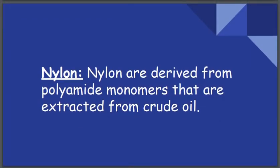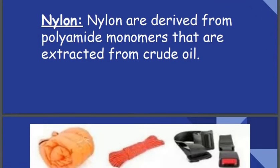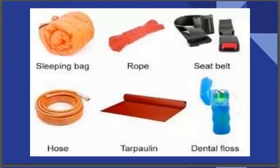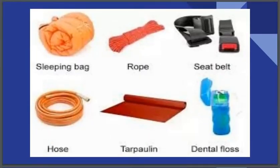The next type of fiber is nylon. Nylon is derived from polyamide monomers and is extracted from crude oil. Examples of nylon products include sleeping bags, ropes, seat belts, hoses, trampolines, and dental floss — all of these are made from nylon.